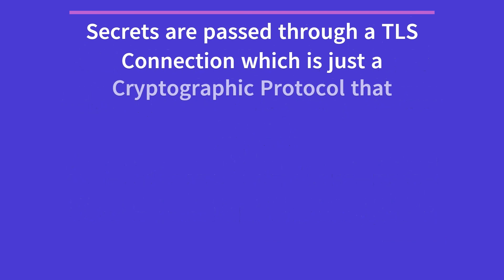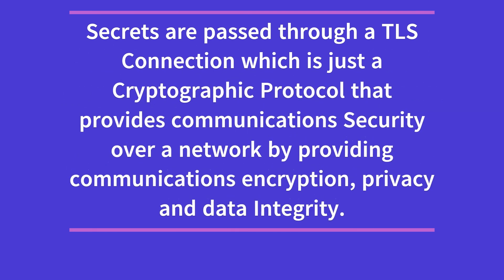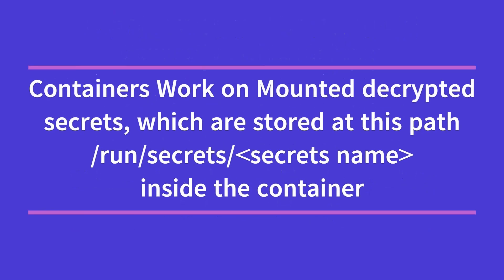In a Docker Swarm, secrets are passed through the network using a TLS connection, which is a cryptographic protocol for providing secure communication. Containers access the secrets in a decrypted form, and they are stored at the path /run/secrets/<secret_name>. We're going to demonstrate that using a Postgres service later in the tutorial.